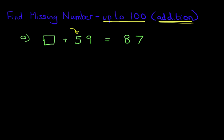And we're going to start with the units. How many units have we got? Well, we've got 9 units. How many units do we need to get to? We need to get to 7 units. Now, 9 plus what number gives us 7 units? The next 7 is 17. So, what number do we have to add to 9 to get to this 17?